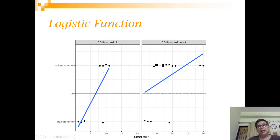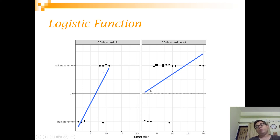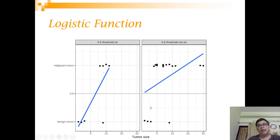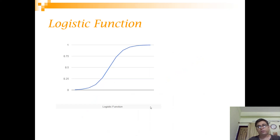Now consider a different case. Linear regression minimizes squared distances, and if you get a line where for any tumor size the response variable starts above 0.5, everything gets classified as malignant. What we really need is a curve that is not completely linear — one that starts low and then rises, something S-shaped. Such a curve is called a logistic curve, from which the name logistic regression derives.